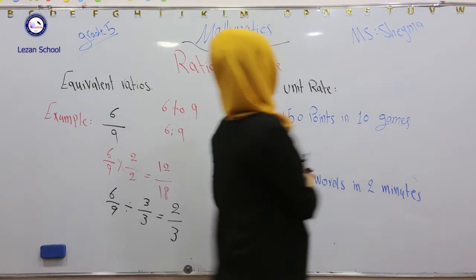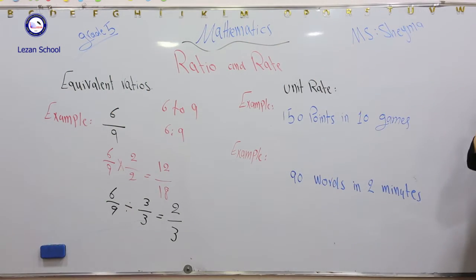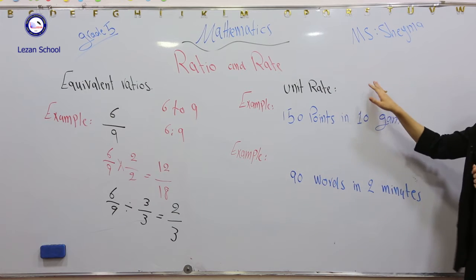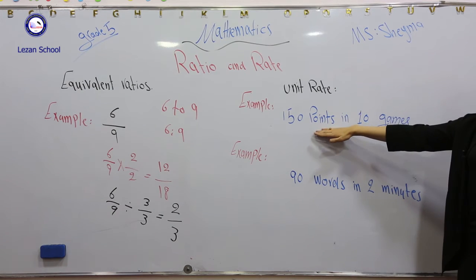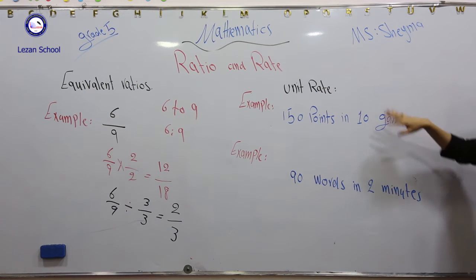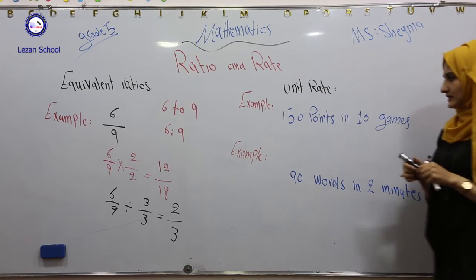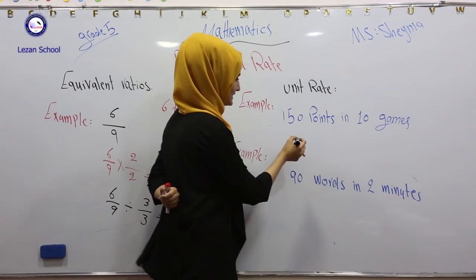In here, we have, guys, a unit rate. What's a unit rate? It's a comparison between two different measurements. In here, look at it. It's points, it's games. So again, unit rate is a comparison between two different units measured.